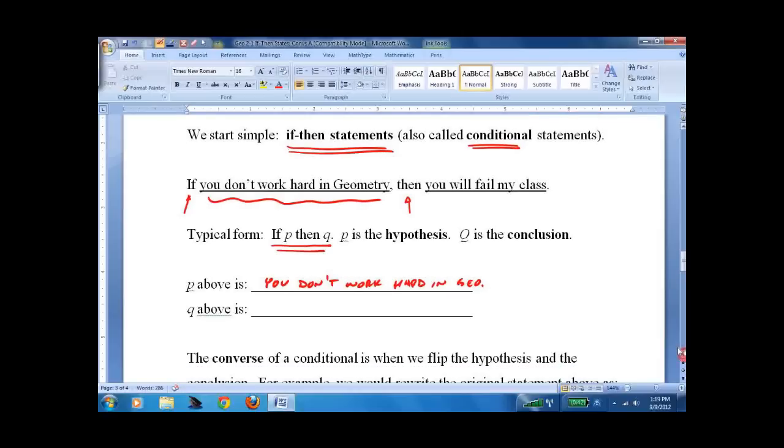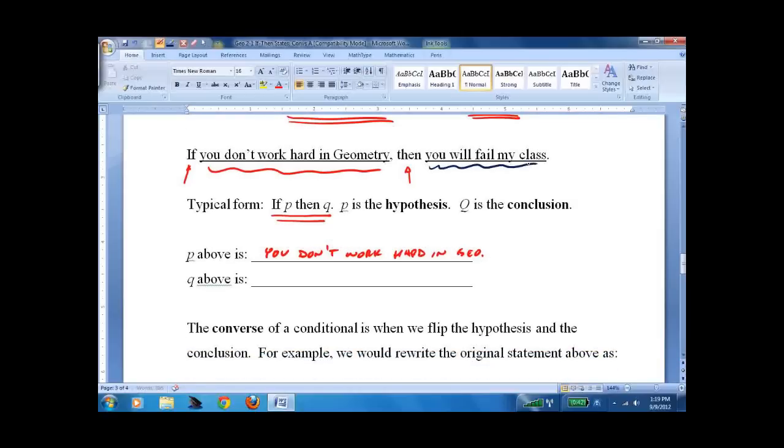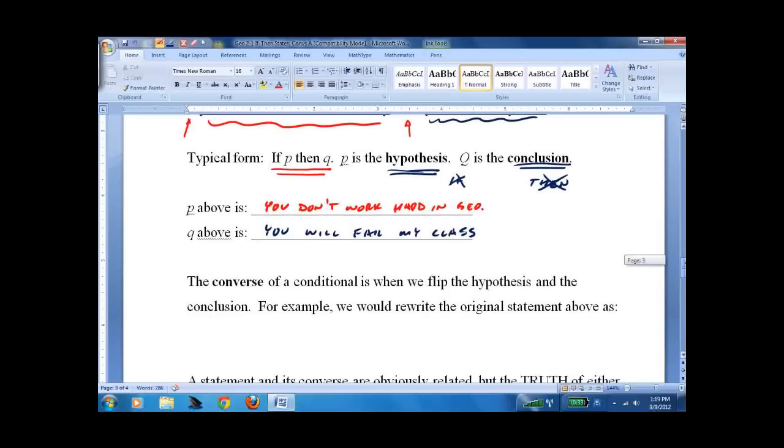And then the conclusion is the part afterwards - you will fail my class. There's really nothing tricky here, this is just the way it's done. One of the things people often get wrong is they think that the hypothesis has an 'if' in it. There's no 'if'. They think the conclusion has a 'then' in it. There's no 'then'. Hypothesis and conclusion are just statements. You can write it forwards and backwards. If you will fail my class, then you don't work hard in geometry - that would be a converse. Don't get hung up on the 'if' and the 'then' - they're just two statements connected with if and then.